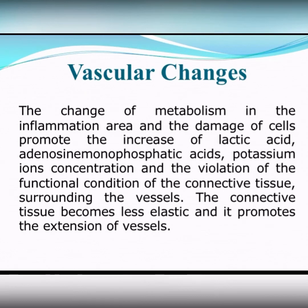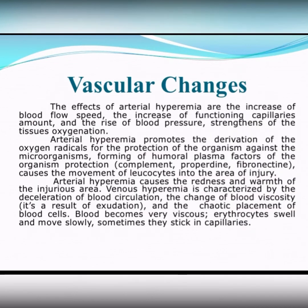The change of metabolism in the inflammation area and the damage of cells promote the increase of lactic acid, other acids, potassium ion concentration, and the violation of the functional condition of the connective tissue surrounding the vessels. The connective tissue becomes less elastic and this promotes the extension of vessels. The effects of arterial hyperemia are the increase of blood flow speed, the increase of functioning capillaries amount, and the rise of blood pressure.